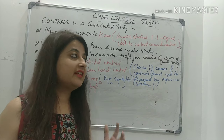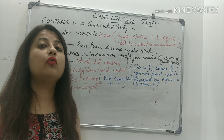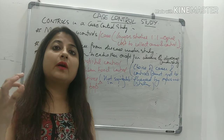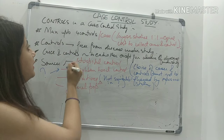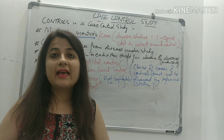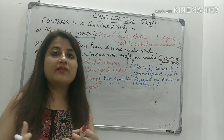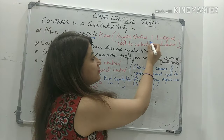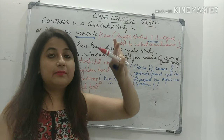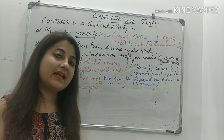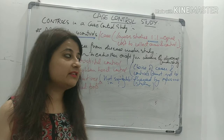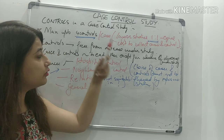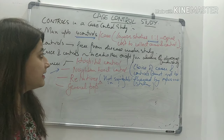One of the most important things is the selection of controls in a case control study. A common exam question is: what is the maximum number of controls you can select per case? The maximum is up to 4 controls per case. However, if the cost of selecting cases and controls are equal, you can restrict to 1-to-1. Having more than 4 controls leads to duplication, so that is the upper limit.